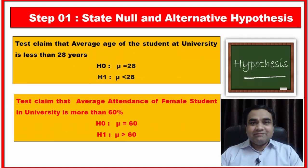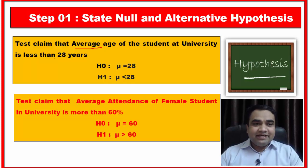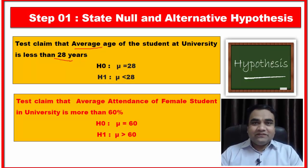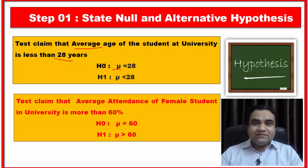Now let us take some examples of statistical hypotheses. Suppose a test claims that the average age of university students is less than 28 years. Here we define the null and alternative hypothesis using mu, which is the population mean. Our null hypothesis is mu equals 28, and our alternative hypothesis is mu is less than 28.